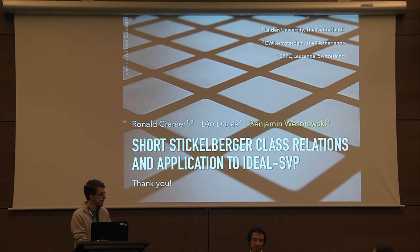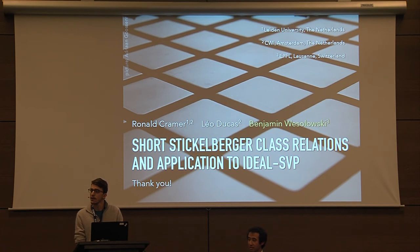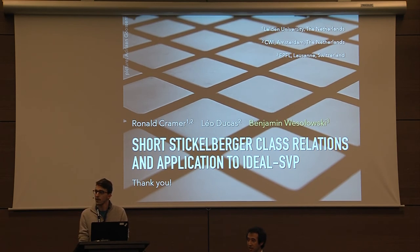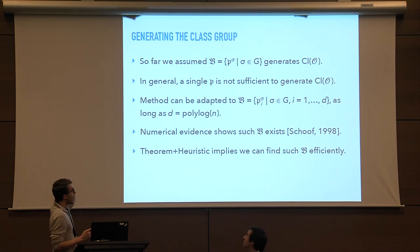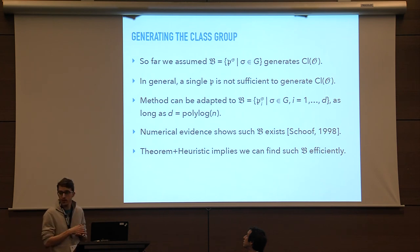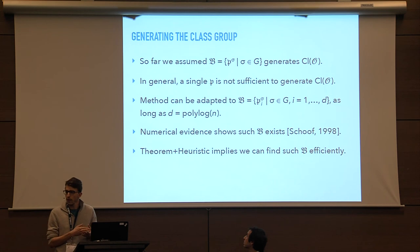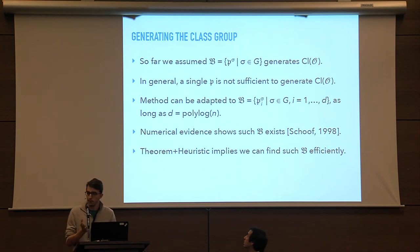We have time for questions. Regarding the assumption that one ideal generates the whole class group under the Galois group action: it's pretty unlikely that one element is sufficient, but we can take a few. The algorithm generalizes and works as long as the number of ideals needed is polylogarithmic in n. There is strong experimental evidence that this is true, though it is very difficult to prove — the structure of the class group is somewhat mysterious in terms of exact statements, but experimentally it works.